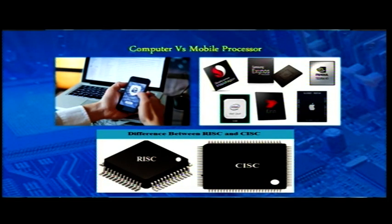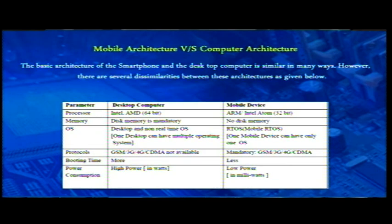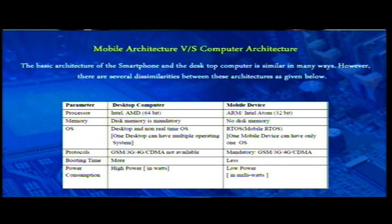Processors in normal computers are of x86 configuration, but mobiles use ARM processors. For instruction set computing, mobiles use RISC (Reduced Instruction Set Computing) while normal computers use CISC (Complex Instruction Set Computing). Communication is more in mobiles and less in normal computers. Additionally, battery usage must be minimized in mobile devices — with batteries of around 4000 mAh or 2000 mAh, hardware must consume less power, unlike laptops or computers which can afford higher power consumption.